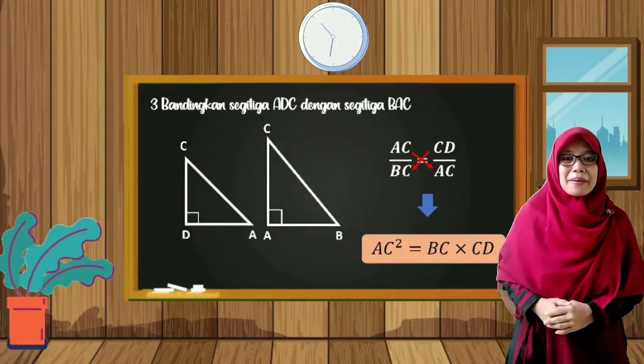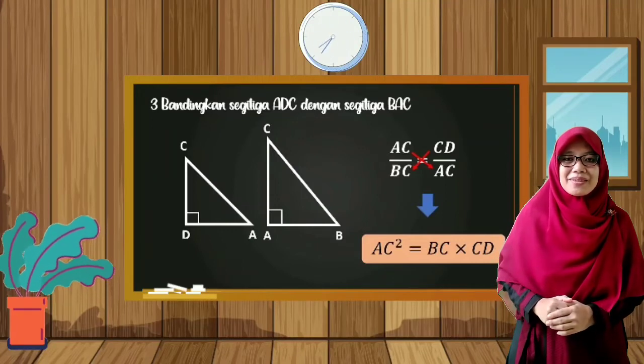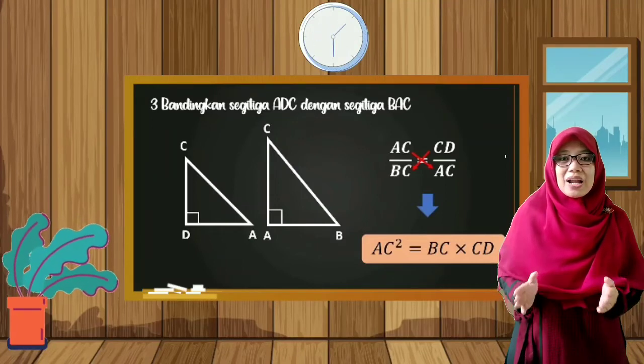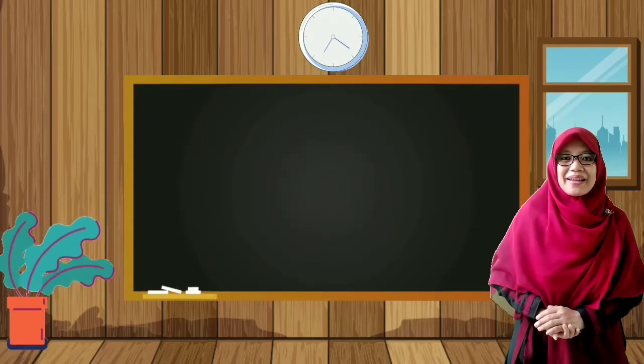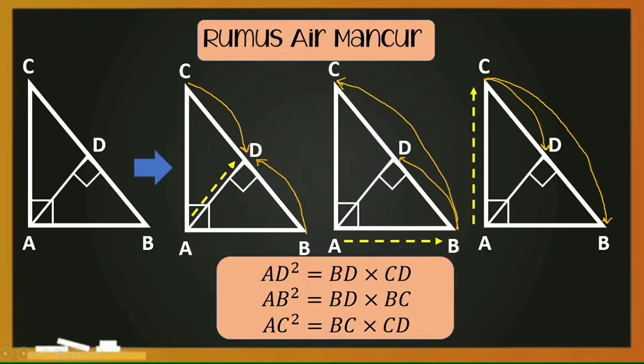Nah, teman-teman, dari perbandingan-perbandingan yang tadi, kita bisa membuat sebuah rumus yang populer disebut dengan rumus air mancur. Bagaimana rumusnya? Kalian simak ya. Teman-teman, berikut adalah rumus air mancur yang berlaku pada kesebangunan khusus segitiga siku-siku. Ibu berharap kalian dapat memahami konsep pembentukan rumusnya dengan memperhatikan tanda panah pada gambar. Sehingga, apabila pada soal diganti hurufnya, kalian tetap bisa membuat rumus air mancurnya.